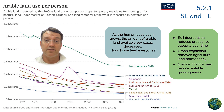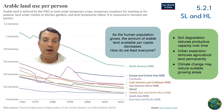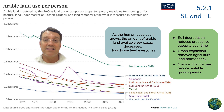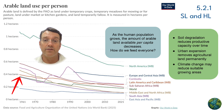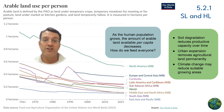This graph shows the reality of our situation. As population grows, the amount of arable land available per person shrinks. Back in 1961, there was over one hectare of arable land per person around the world, but by 2021 that had dropped to less than two-tenths of a hectare per person in many regions.